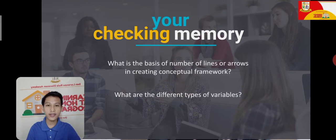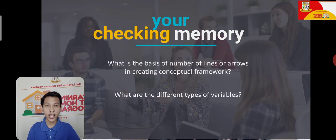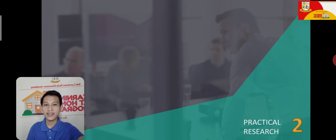Number 2: what are the different types of variables? We have independent, dependent, and then we have other variables which are called mediator, moderator, and control variables. It is important that you know each type of variable so that you can graph your conceptual framework easily.